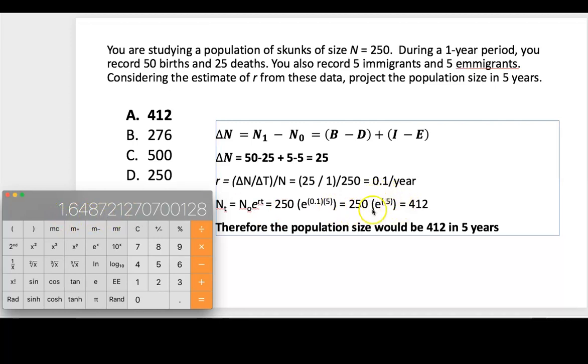Then we need to multiply that number times 250, which is our initial population size. So we just multiply it by 250 and we get 412. And that's how we get the estimate of population size for this particular question in 5 years.